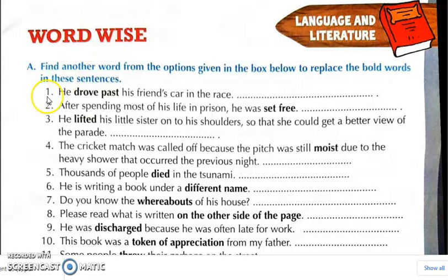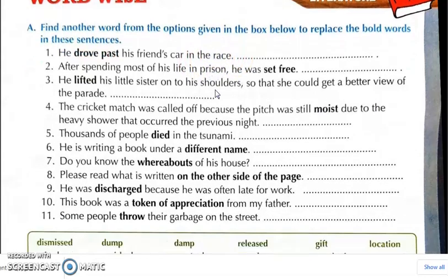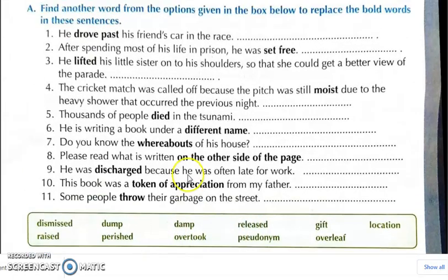First question: he drove past his friend's car in the race. The first answer is overtook.